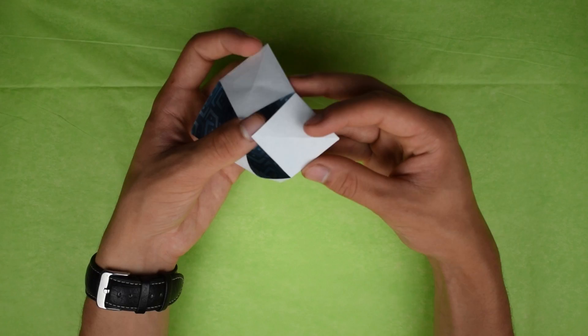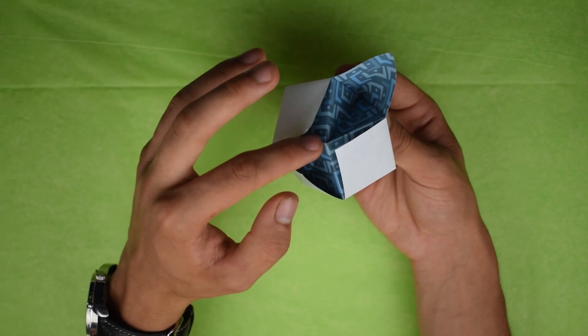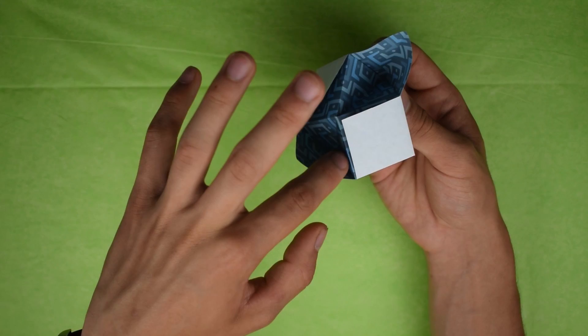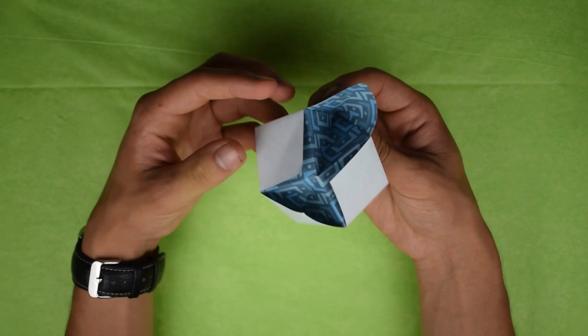Alright, you'll see these folds. Let's see if I can get a better shot. These folds running along here, along here, those become mountain folds. Alright, so now we have this shape.